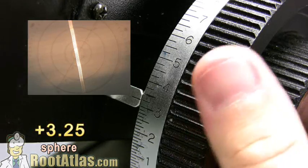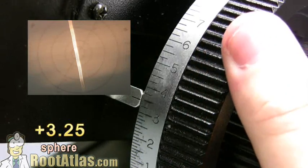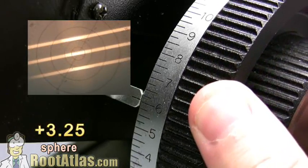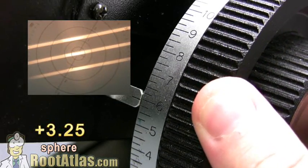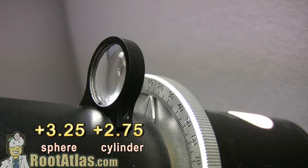Now you move the focus in whatever direction it takes to get the three fat lines in focus, and the difference between those is your cylinder power. So we went up plus 2.75 to get to 6. That's our cylinder: plus 2.75.